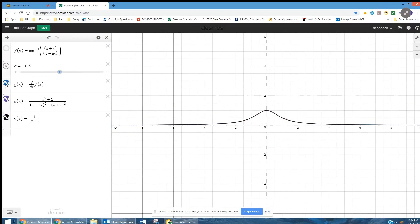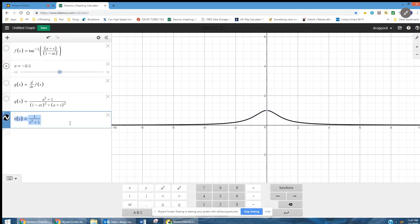I use the Desmos derivative function to show what the derivative of f of x looks like. There's its graph. And then I've created the function q of x that's similar to what we did on the whiteboard before we simplified it. And it matches what we started with. And finally, v of x is the simplest form. And that also has the same graph. So that convinces me that this answer is correct.